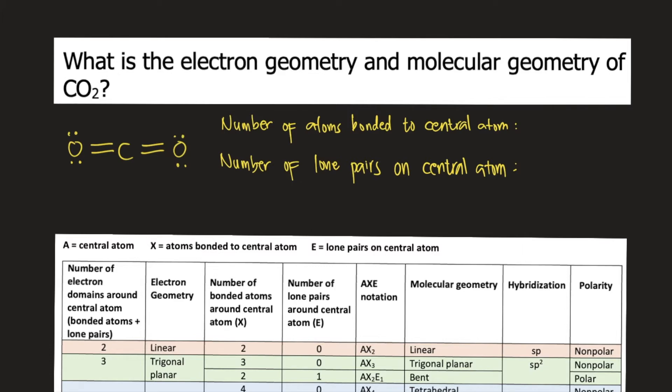it is obvious that the central atom in carbon dioxide is carbon. Now let's count how many atoms are bonded to the central atom. How many atoms are bonded to carbon? We have one, two atoms bonded to carbon. So we put two.